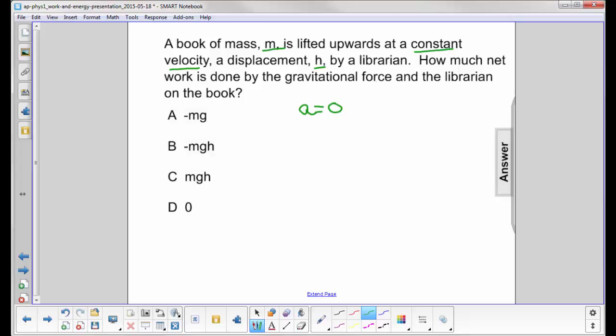So how much net work is done by the gravitational force and the librarian? They're looking for the net work. The net work depends on the net force. If I have zero acceleration, my net force, due to Newton's second law, has to also equal zero. So the net work is zero.